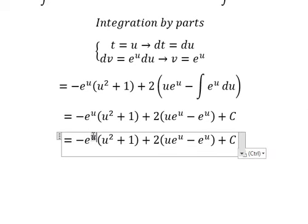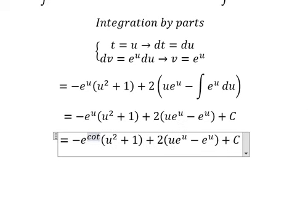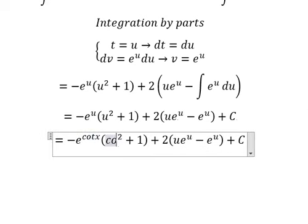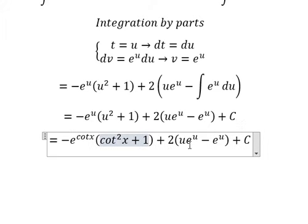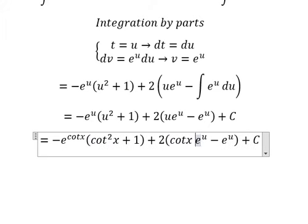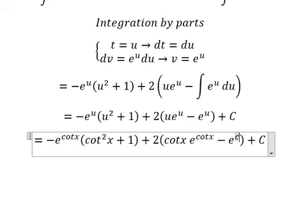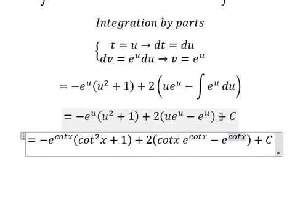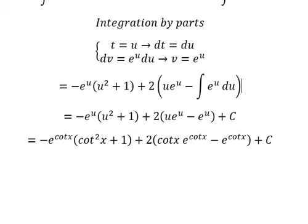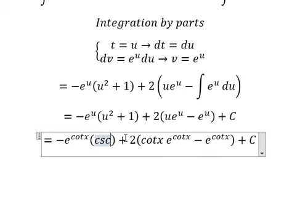Now u is cot x, and this can be changed into csc of x.